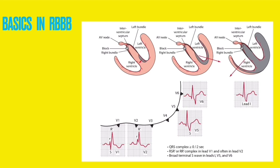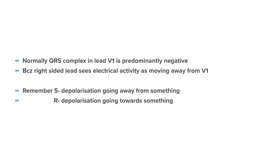Normally, the ventricular septum depolarizes first, followed by right ventricular depolarization, then left ventricular depolarization. Predominantly the depolarization is towards the left ventricle, so right ventricular depolarization cannot be identified separately on ECG. This means the QRS complex in lead V1 is predominantly negative, because the right-sided lead V1 sees electrical activity as moving away from it. The S wave means depolarization is going away from something, and the R wave means depolarization is going towards something. Here the depolarization wave is going away from lead V1, so there is less R wave and a predominant S wave in lead V1 — the QRS complex shows a predominantly negative wave.